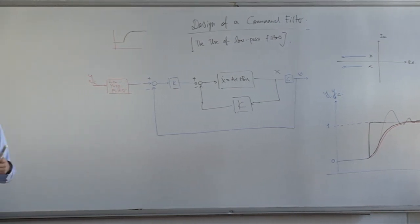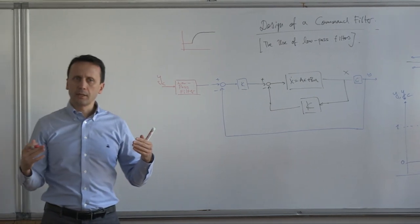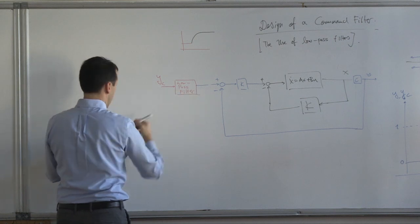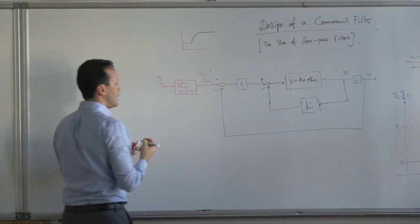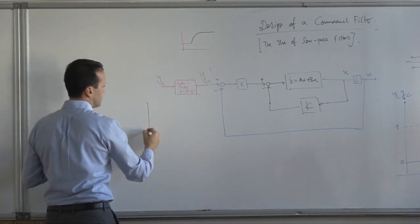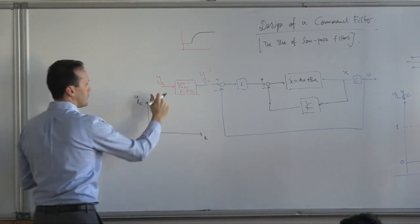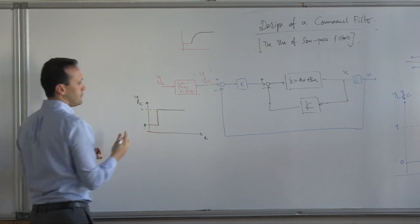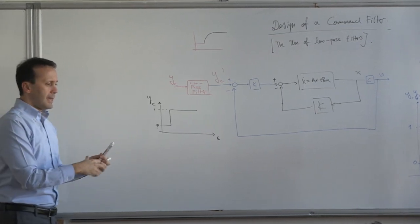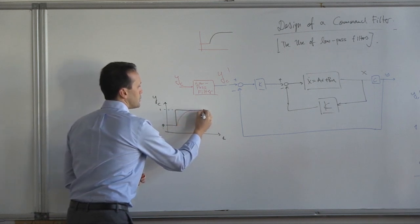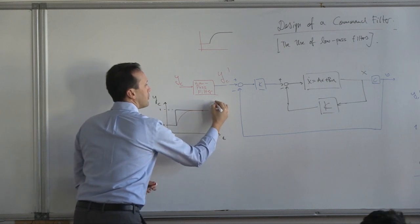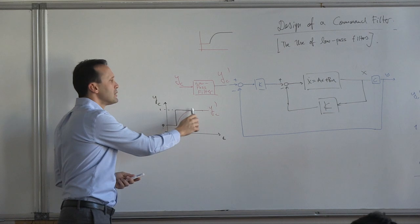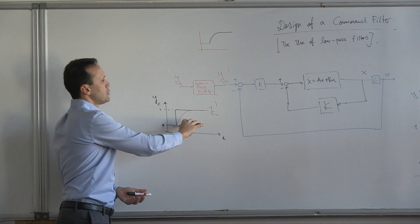What does a low-pass filter do? It passes the low frequencies in a signal and removes the high frequencies. So what does it mean? It has the following behavior. Let's call the input YC and the output YC prime. If you give a step input like this — from zero to one — the low-pass filter takes this signal, smooths it out, and turns it into something like that. If it's a first-order system, it turns it like that. And this would be YC prime. So it smooths out the strong signals, the high-frequency signals. The high-frequency components are these sharp edges, so they're smoothed out and you get a smooth signal.